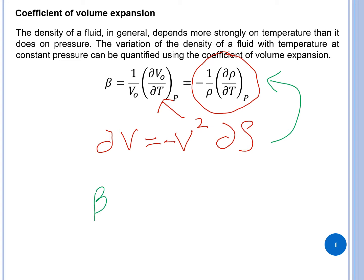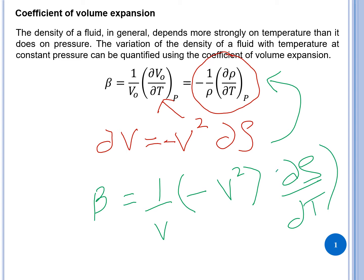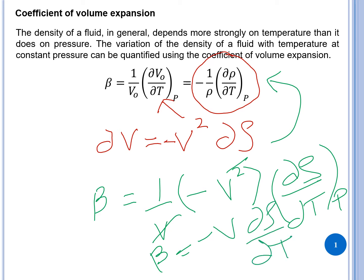To show the derivation: beta equals 1 over v-naught times negative v-squared times d-rho over dT at constant pressure. The v-naught and v-squared terms partially cancel, giving beta equals negative v times d-rho over dT, which simplifies to beta equals negative 1 over rho times d-rho over dT.